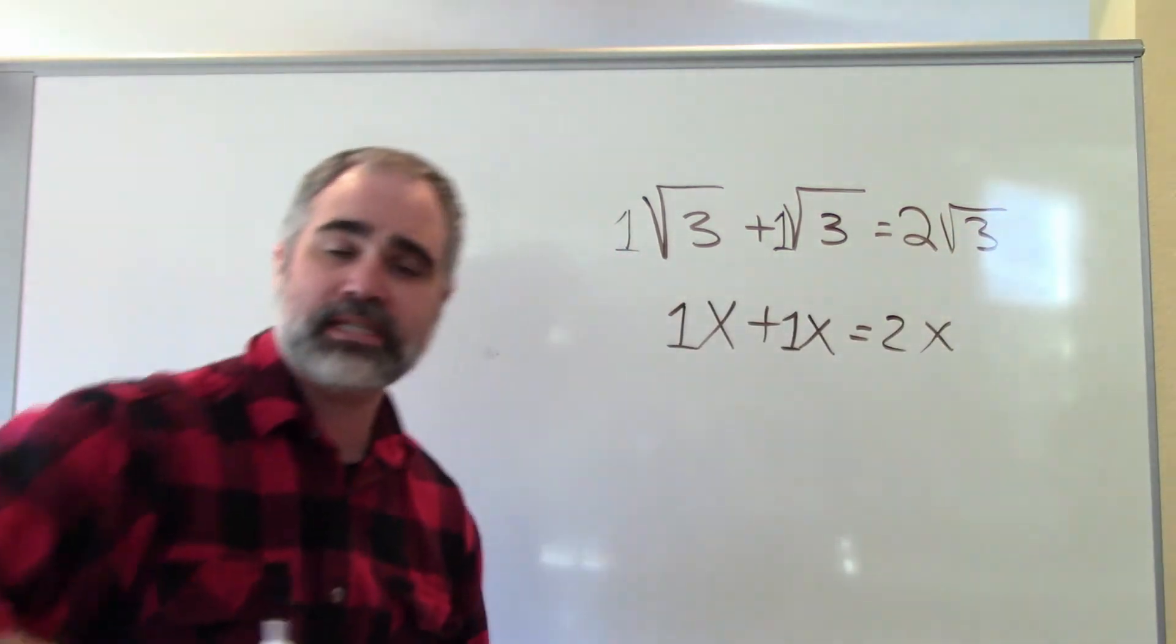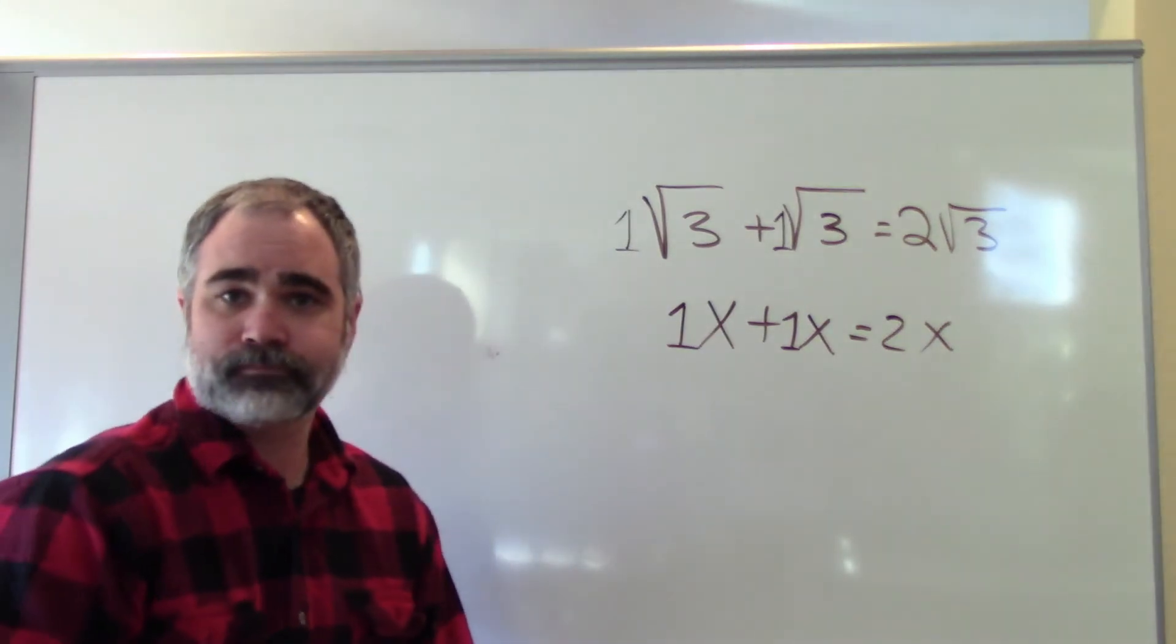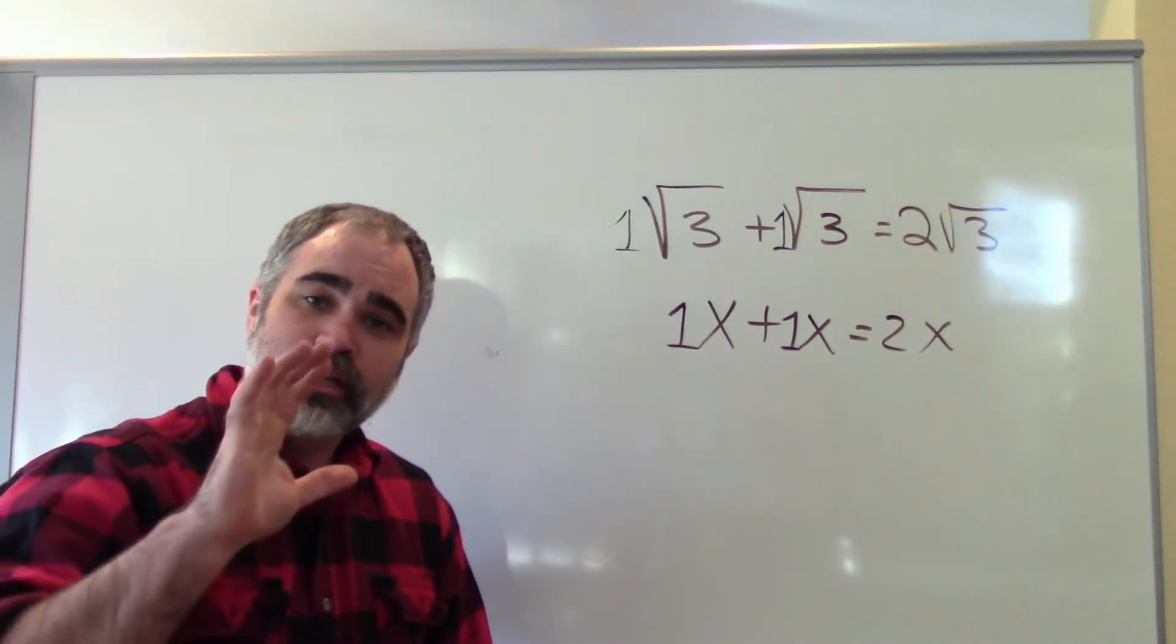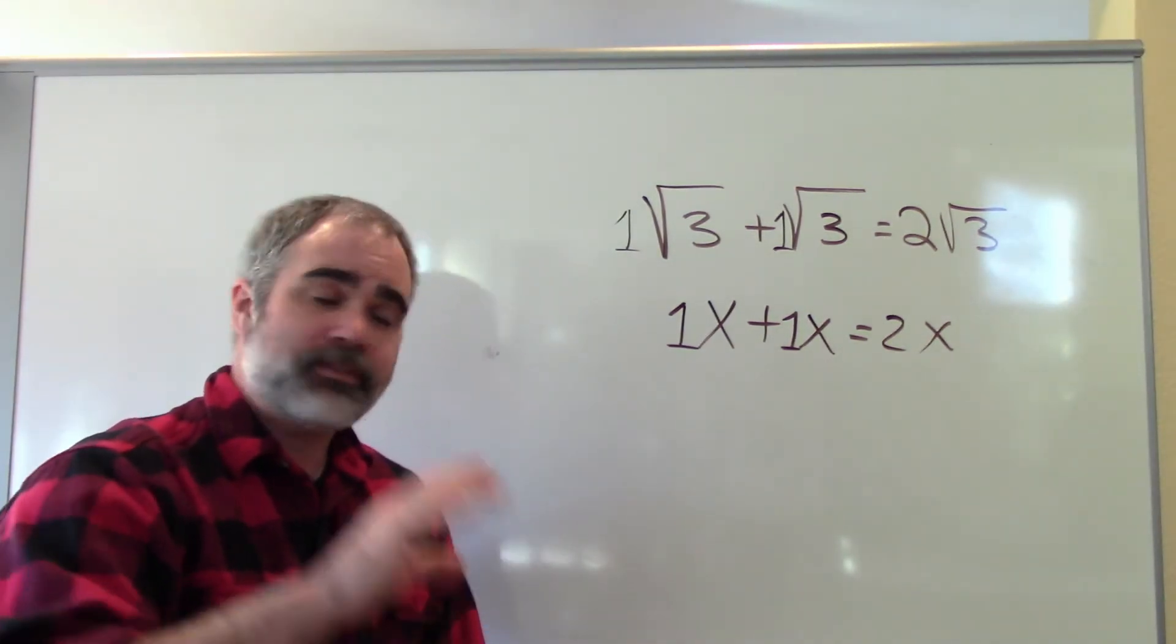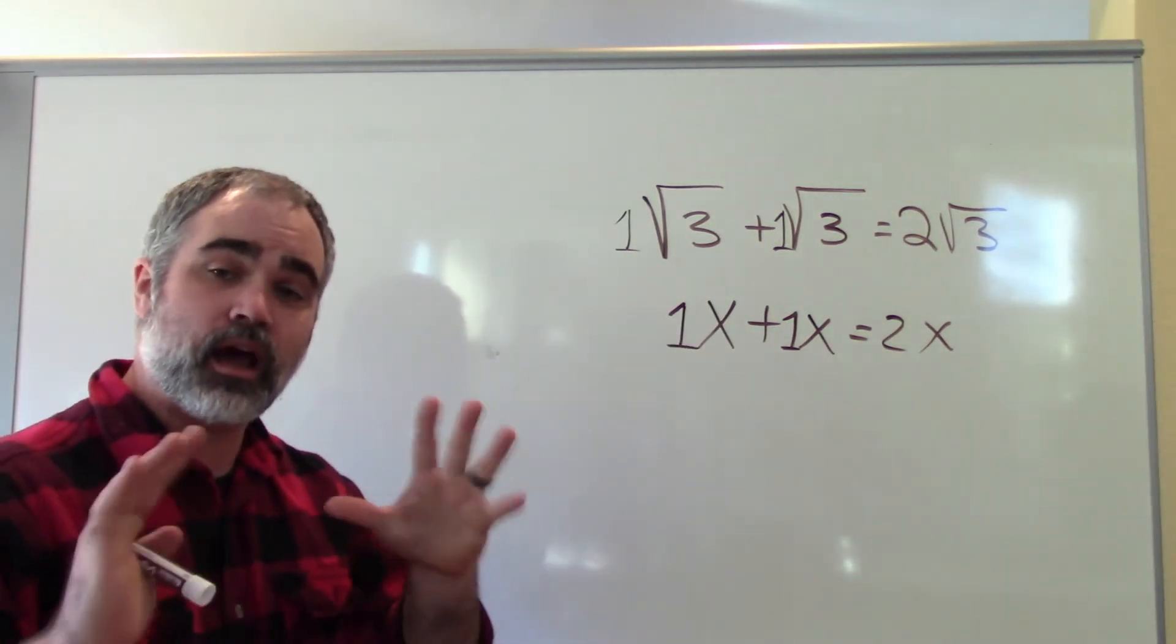It's exactly the same addition process that you would do with variables. So you can add square roots together if they have the same number on the inside and you can't otherwise.